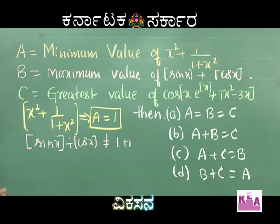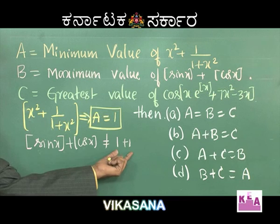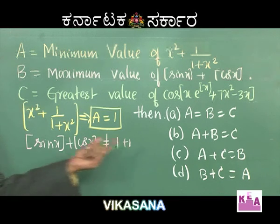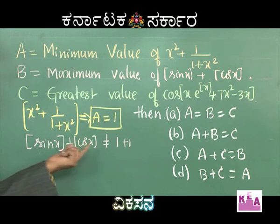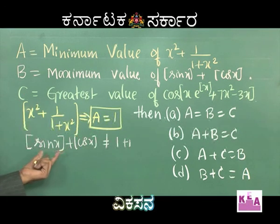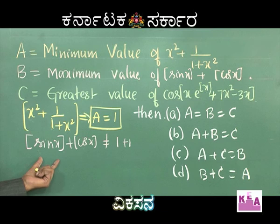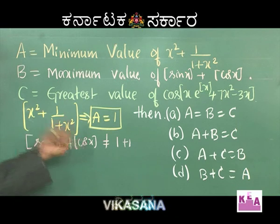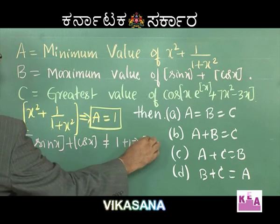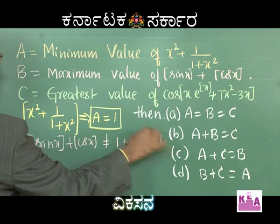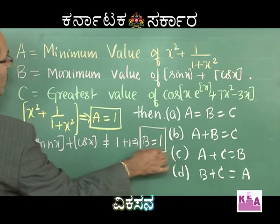Maximum value must be 1. When x = 0, cos x = 1 and sin x = 0; when x = π/2, sin x = 1 and cos x = 0. Therefore the value of B is equal to 1.